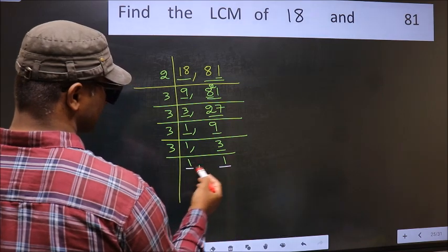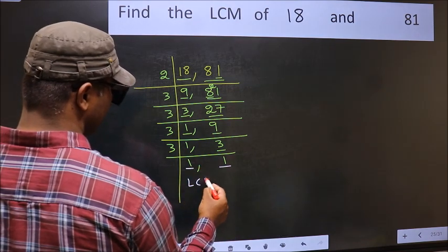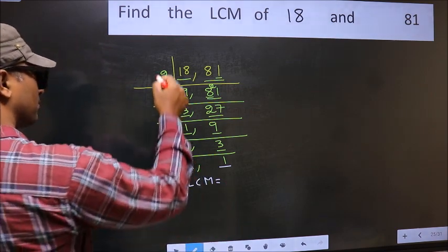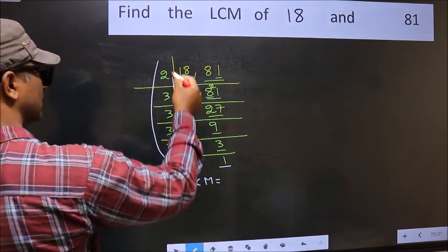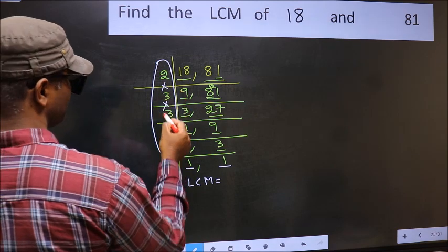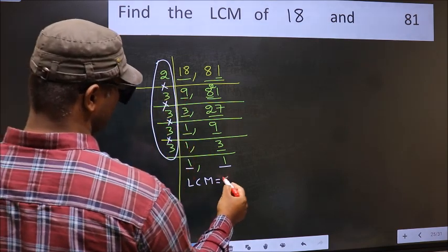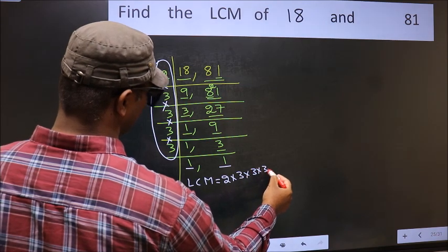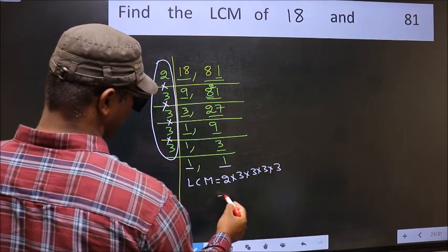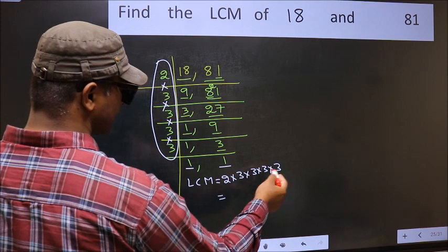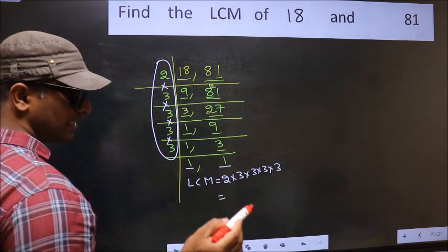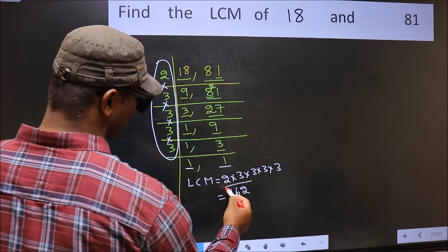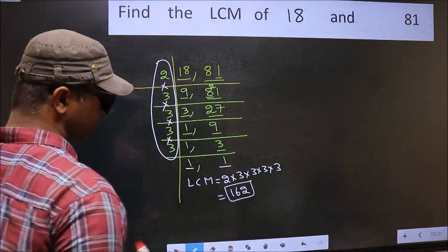So our LCM is the product of these numbers: 2 times 3 times 3 times 3 times 3 times 3 times 3. When we multiply these numbers we get 162. So 162 is our LCM.